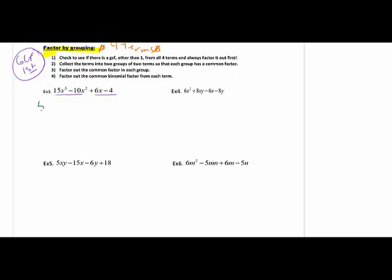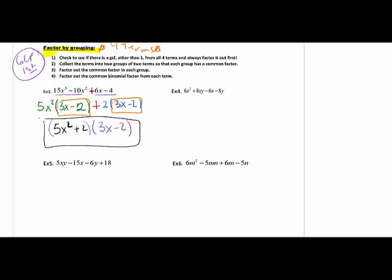Out of the first pair I can pull out a 5x², leaving me with 3x − 2. Always bring the sign down. Out of the second pair I can pull out a 2, leaving 3x − 2. In order to keep going, these must always match, because we're basically doing backwards FOIL to find our two binomials. If they match, that common binomial comes out, and what is left over goes into the other parentheses. I do not write 3x − 2 twice — I factor it out and put the leftover in the other parentheses.